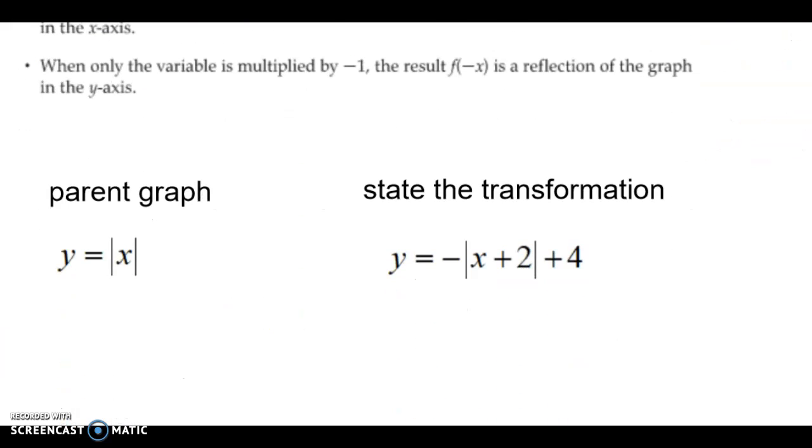Now, if you have a negative in front, it's going to flip it upside down. So this parent graph absolute value looks like that. When there's a negative in front, it's going to look like this.